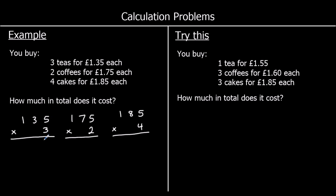For the teas: three fives are 15, so five in the ones carry over one. In the tens, three threes are nine, plus one is ten — zero in the tens carry one to the hundreds. And three ones are three, plus the one is four. So 135p × 3 = 405p.